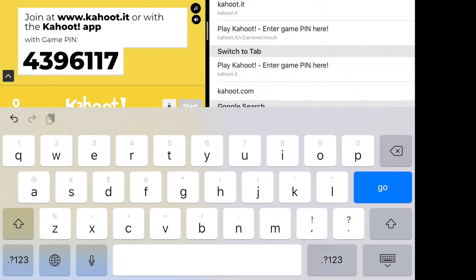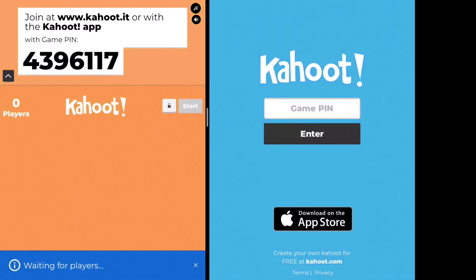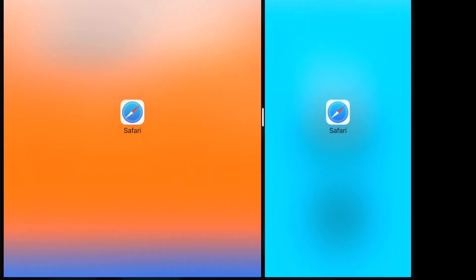Go to Kahoot.it to get to the game pin page. You can control the size of the two screens by placing your finger on the center bar and sliding it right and left.